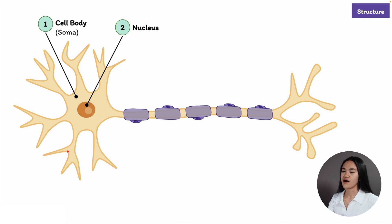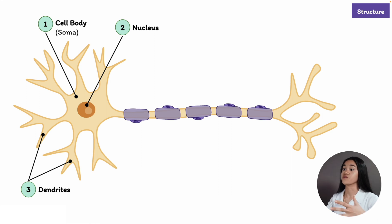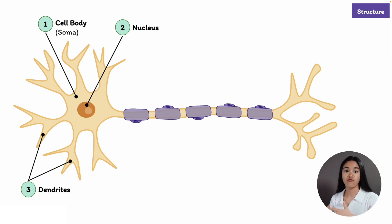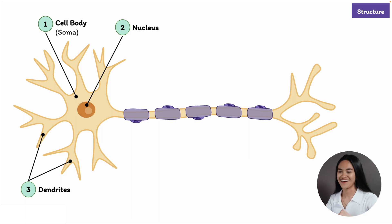These short, highly branched extensions that look like antennas are called dendrites. The dendrites, along with the cell body, receive incoming information from other neurons — they receive signals. Some central nervous system neurons may have as many as 400,000 dendrites, so the structure of dendrites increases a cell's ability to receive messages from several other neurons.